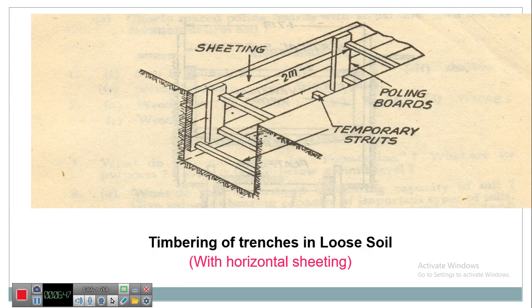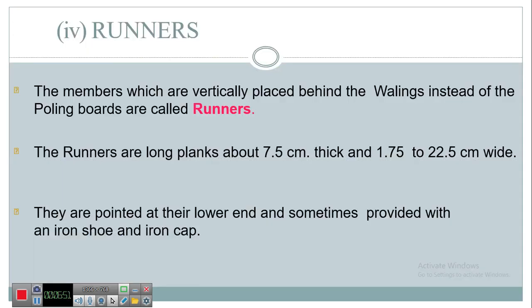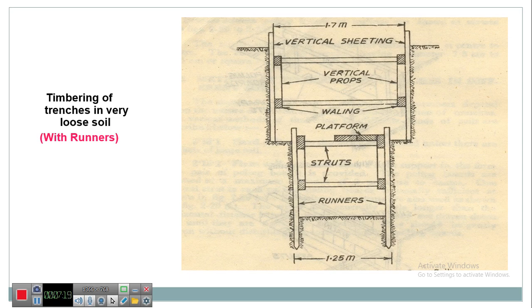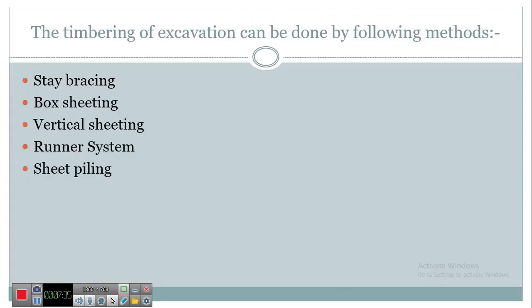You can see the difference between vertical sheeting and horizontal sheeting in both images. Another member is the runner — members placed vertically behind the walling and in front of the polling boards are called runners. Runners are long planks about 7.5 cm thick and 1.75 to 22.5 cm wide. They are pointed at their lower end and sometimes provided with an iron shoe or iron cap. Runners are placed about 1.25 meters apart and are also used in loose soil.